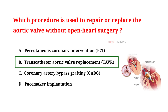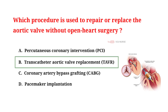The procedure used to repair or replace the aortic valve without open heart surgery is called transcatheter aortic valve replacement, TAVR. This procedure involves inserting a new valve via a catheter through a blood vessel, often accessed through the groin. This method avoids the need for open heart surgery and allows for quicker recovery.